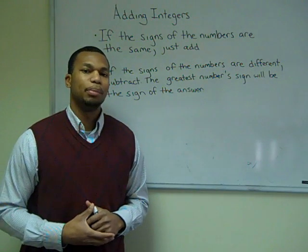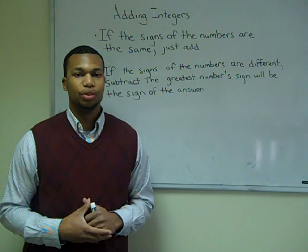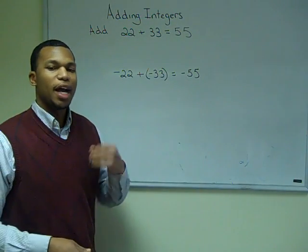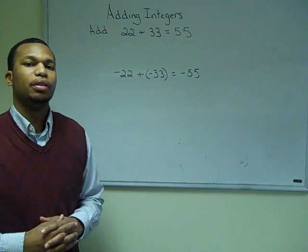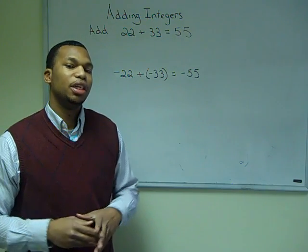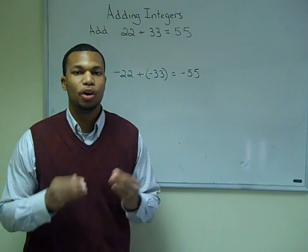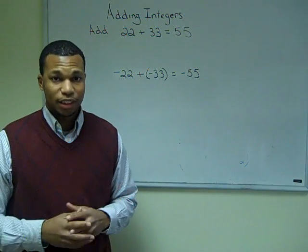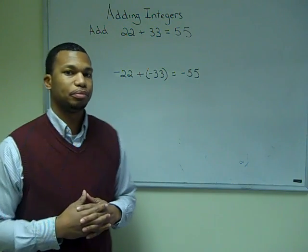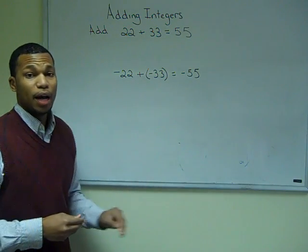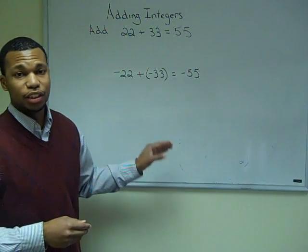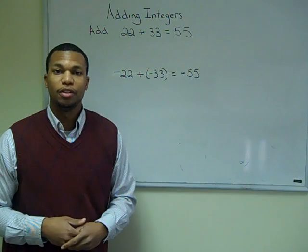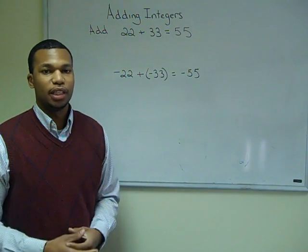Now let's do some examples applying these rules. If we have positive 22 and we're adding it to positive 33, our answer is going to be positive 55. Why? Because both signs are the same — we have two positive numbers, so our answer is positive. In the next example, negative 22 plus negative 33 gives us negative 55, because they are the same signs — two negatives.